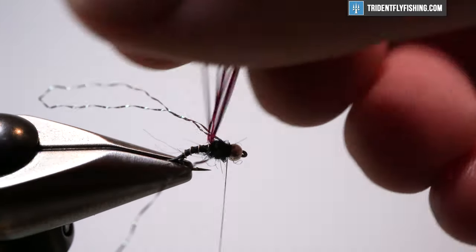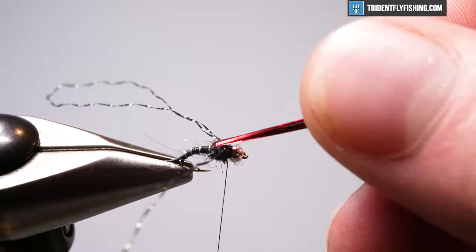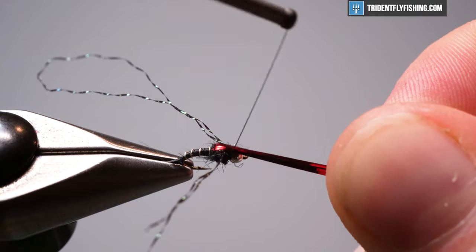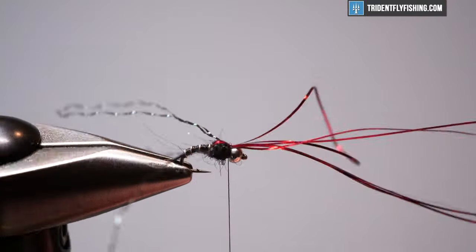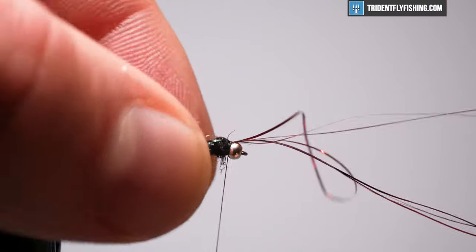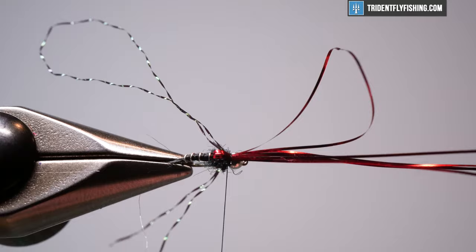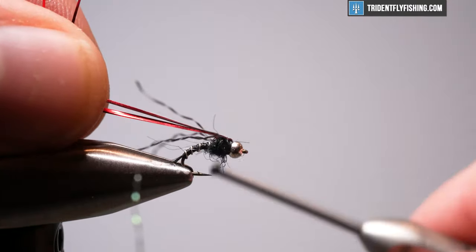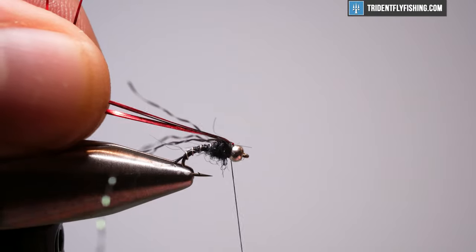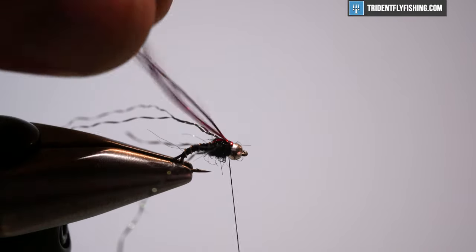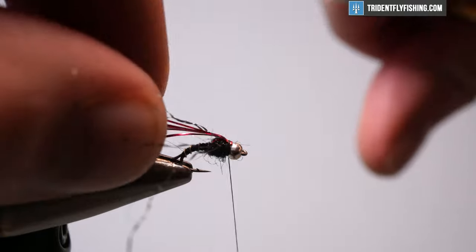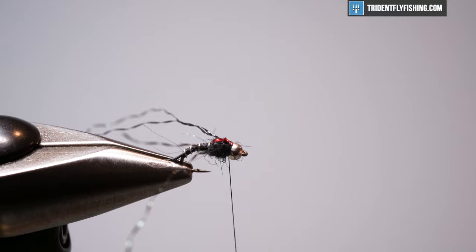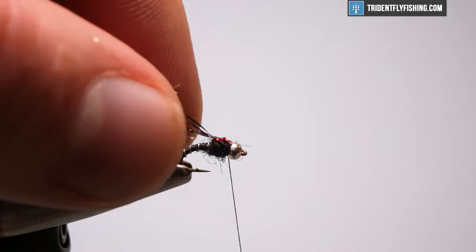So we're going to pull this over. And I know it looks like a mess. I got a bunch of fibers here. If you want to use holographic tinsel, it'd probably be easier for most people. I'll check to make sure that's right on top of the hook shank. Looks pretty good to me. And then we're going to pull this back. Get a couple wraps and then we'll just cut this out of the way. Come right in here. Take that out.